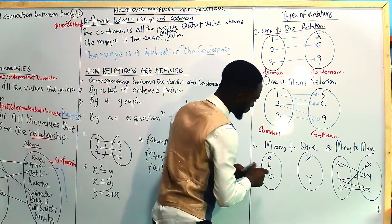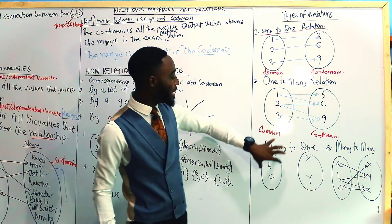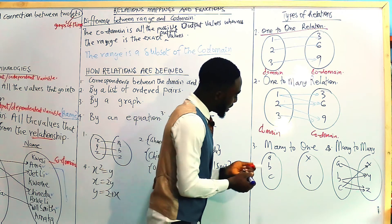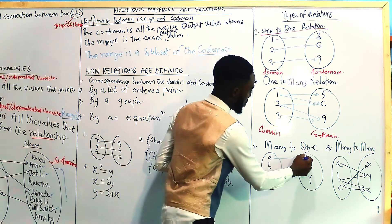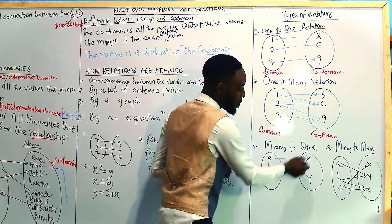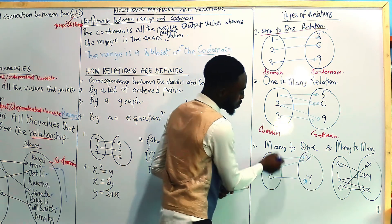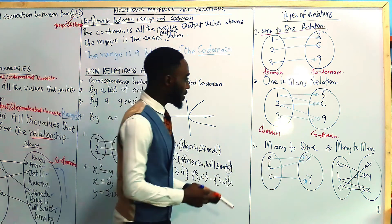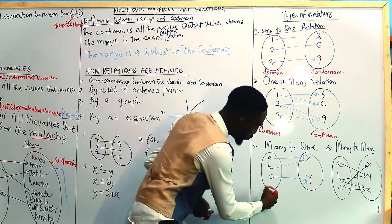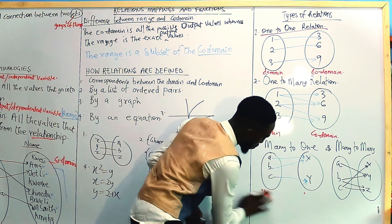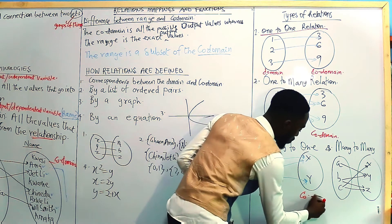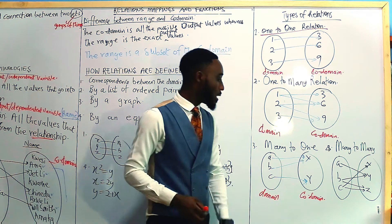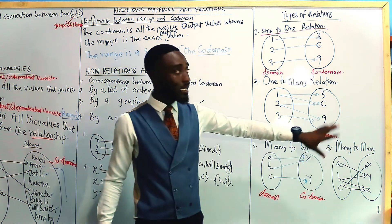The next one is called many-to-one. As the name suggests, we have many values in the domain mapping to just one value in the co-domain. For example, A and B both map to X. So many domain values go into one co-domain value — this is a many-to-one relation.